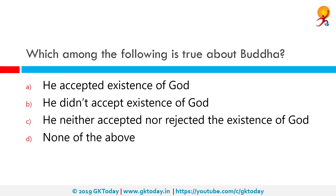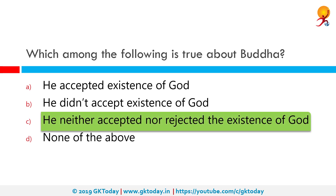Which among the following is true about Buddha? The correct answer is that he neither accepted nor rejected the existence of God. After Siddhartha Gautama became Buddha at the age of 35 having gained enlightenment, he began travelling throughout India and Nepal, teaching the steps he took to reach a state of pure Nirvana. While lecturing both loyal disciples and unacquainted seekers, Buddha made a point to dismiss the notion of a higher power, as he believed it had no particular purpose for reaching the state of enlightenment.